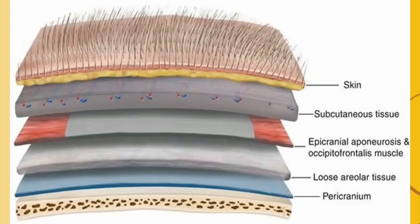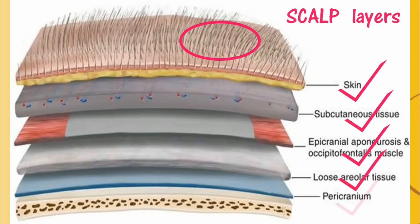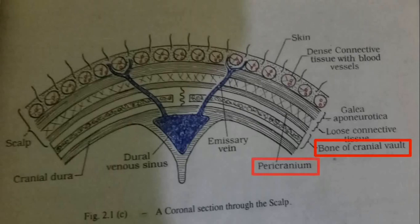First of all about the scalp. First thing we see here is the hairs on our scalp. These hairs are attached on the skin, below which are the closed network of the subcutaneous tissue. Then lies the epineurosis, then the loose subepineuritic tissue and the innermost layer is the pericranium. Then lies the skull bones. The skull bones towards the outside are covered by the pericranium, which is the outer periosteum, and towards the inside the bones are covered by the inner periosteum of the skull.